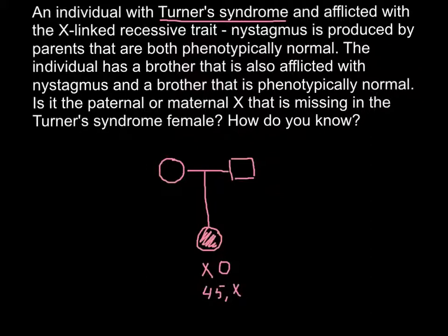We know that one chromosome is missing, and phenotypically this individual is female because one X chromosome is present but the other is missing. This female also has two brothers: one who is phenotypically normal and another who is also affected.